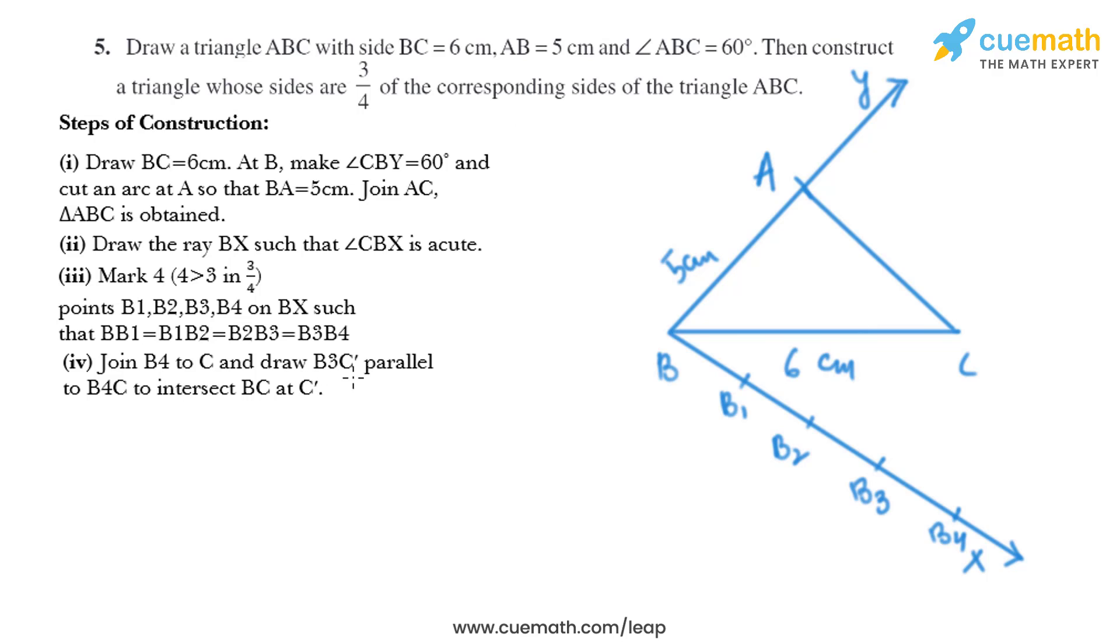So let's join B4 and C, so we'll draw a line like this. And now we'll draw a line parallel to B4C like this and we'll mark the point of intersection as C'.